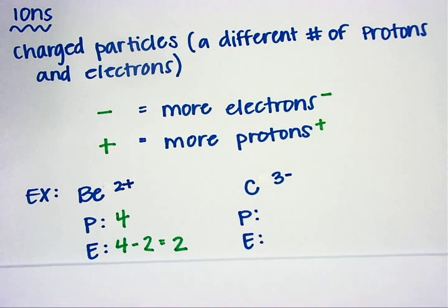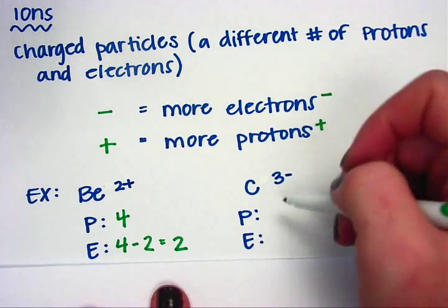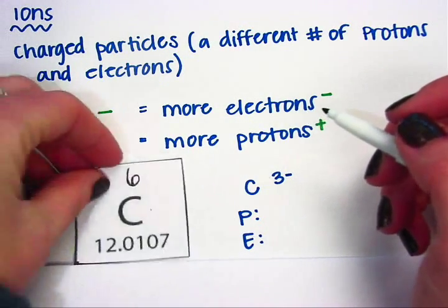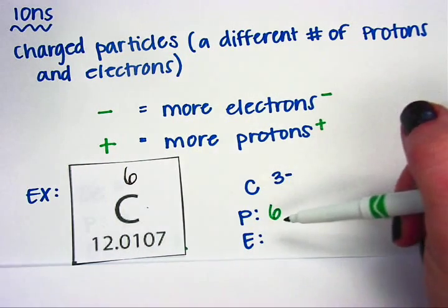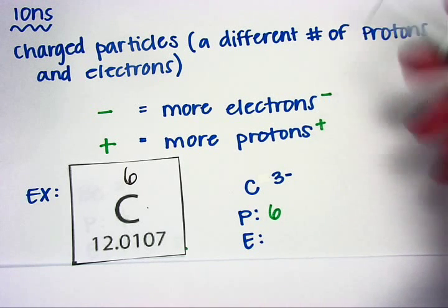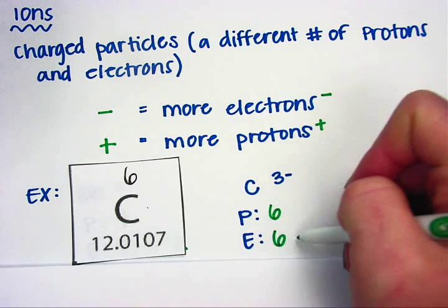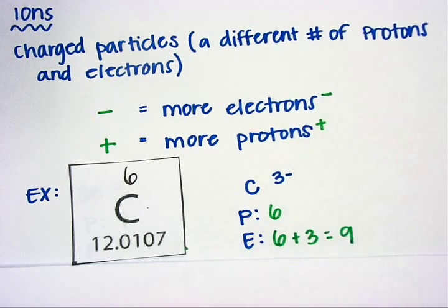Same thing in the next one. You have carbon with a -3 charge. Carbon, according to the periodic table, has 6 protons. Since I have a negative charge, that means I have extra electrons. So I will add: 6 plus 3 gives me 9 electrons.